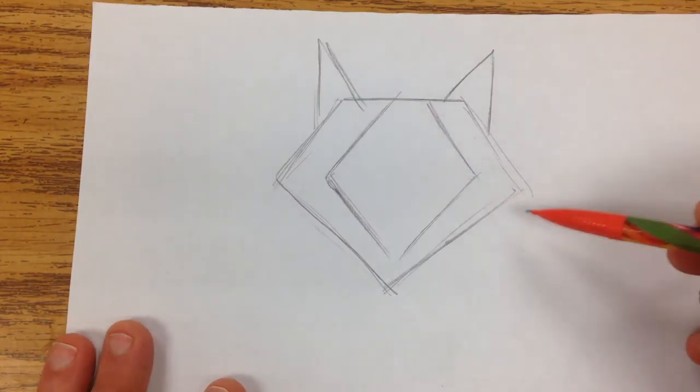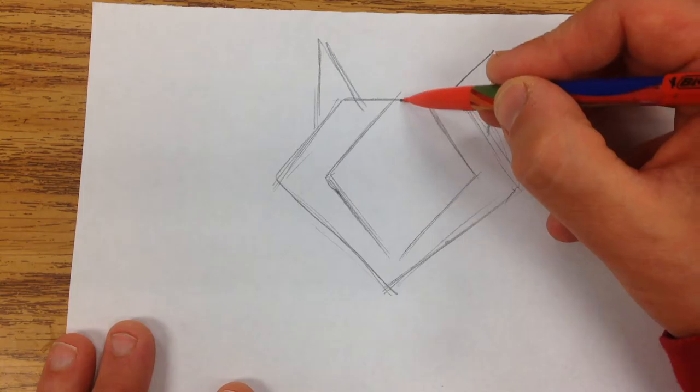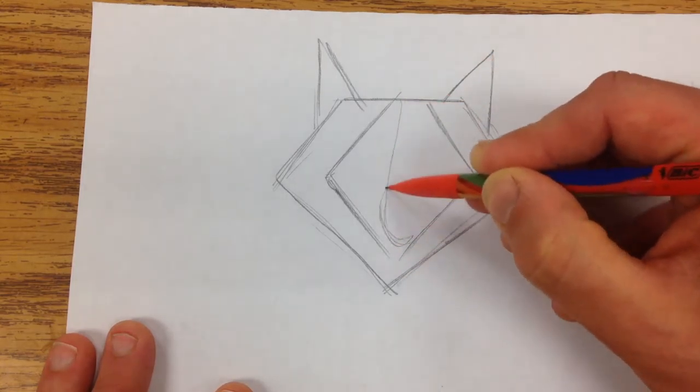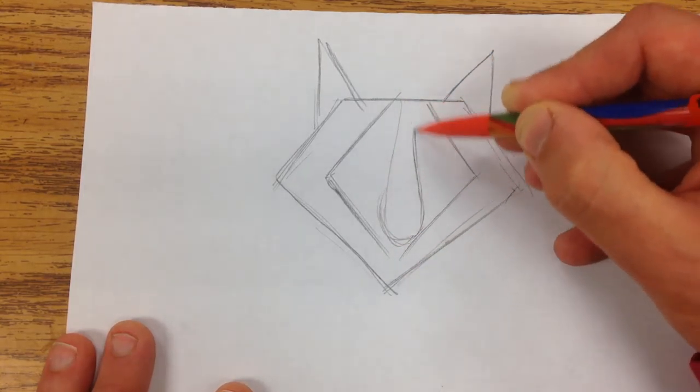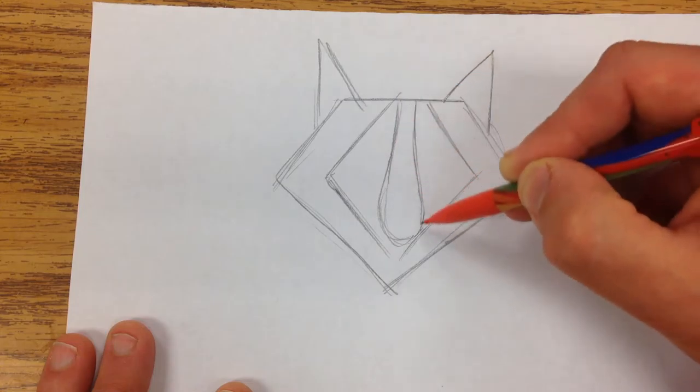Most of our lines have been really straight, but now I'm going to go ahead and make this curved section for the snout and then that stripe that goes through the middle of their face.